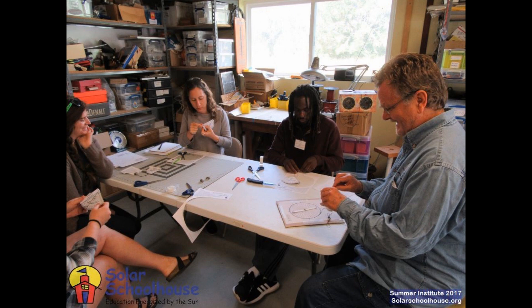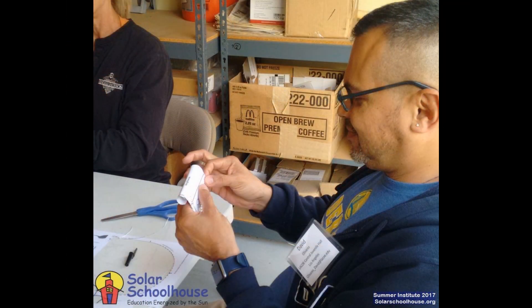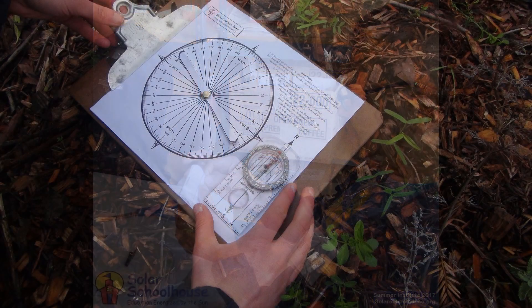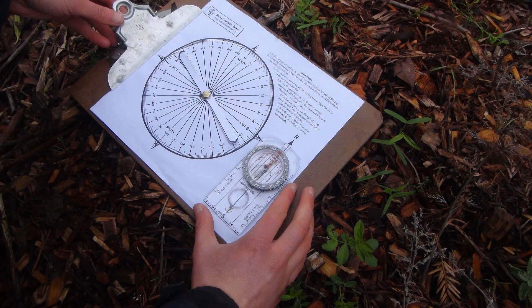The first step is to get your tools ready. Print out and follow instructions for setting up the Sun Angle Quadrant and Solar Compass Rose from Solarschoolhouse.org.